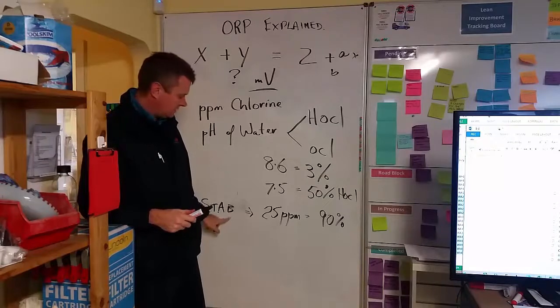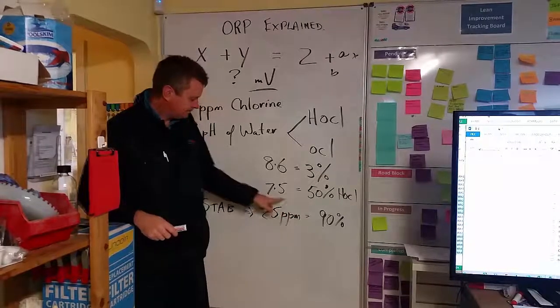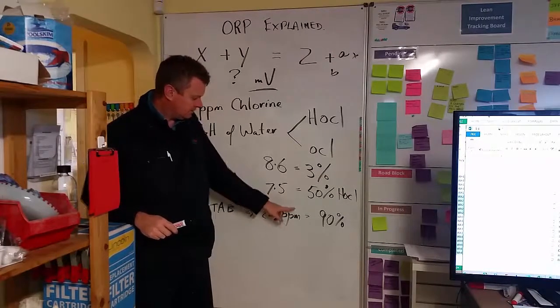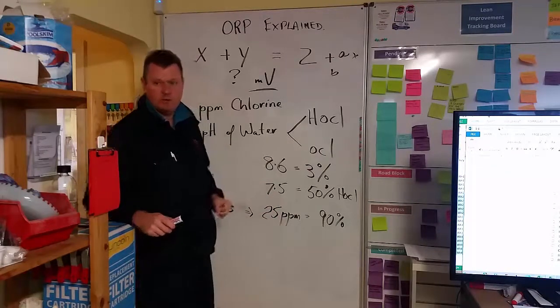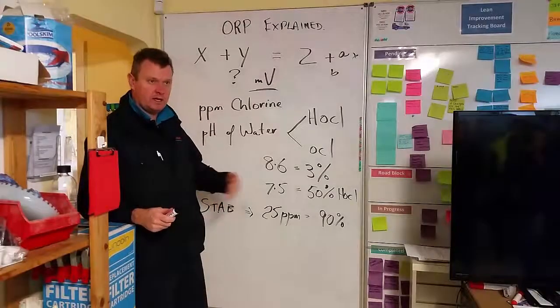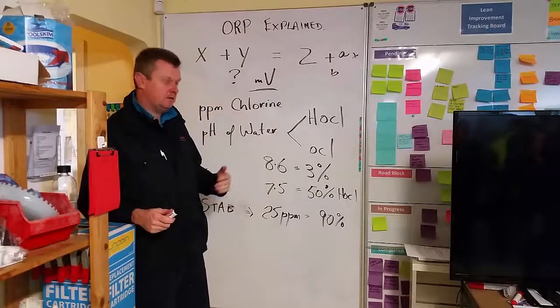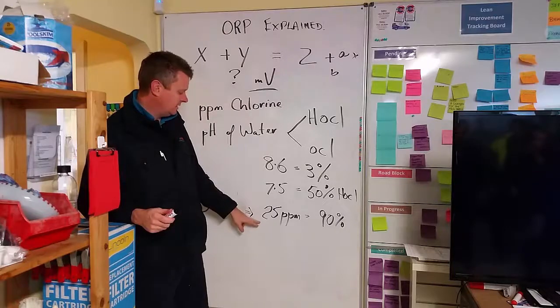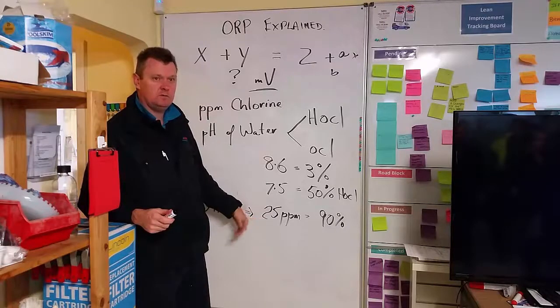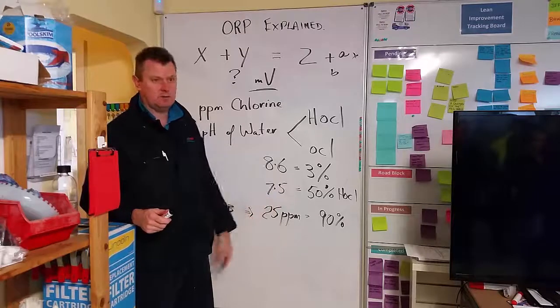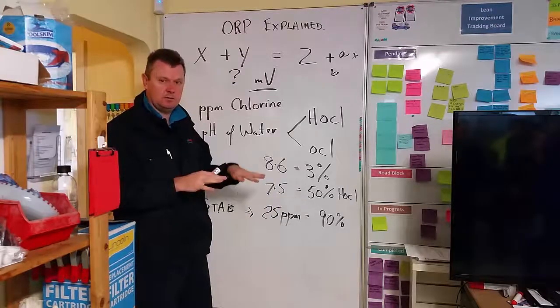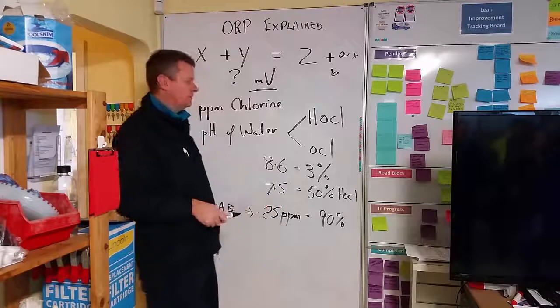But as I say, we should be looking at around about 35 ppm, I'd say, for our regular customers, because we're back there every month at least. Maintain 35, and then when you come to dose, if it gets down to 25, 500 grams or something like that to try and keep that stabiliser level at the lower end of the range.